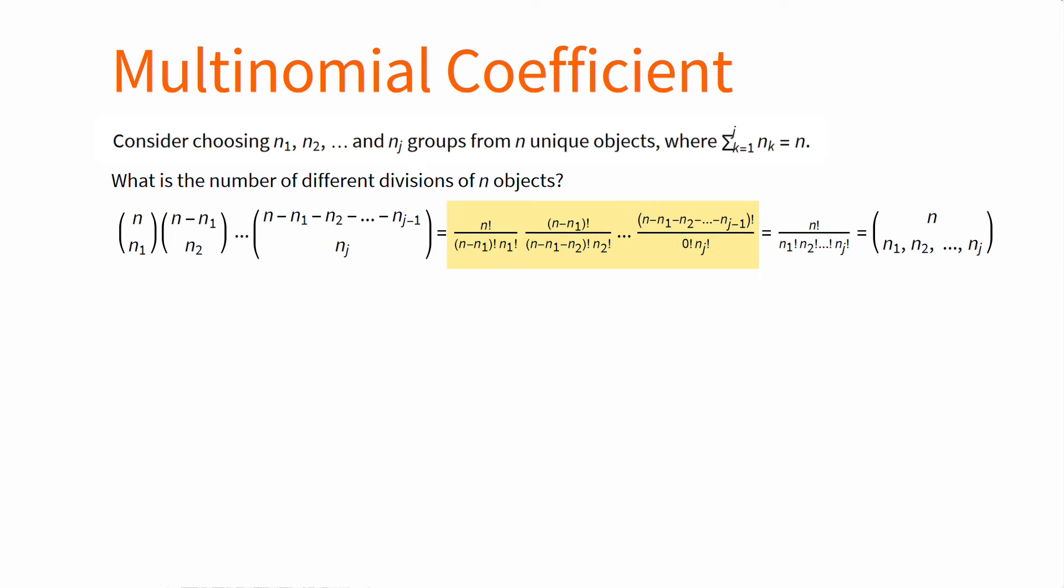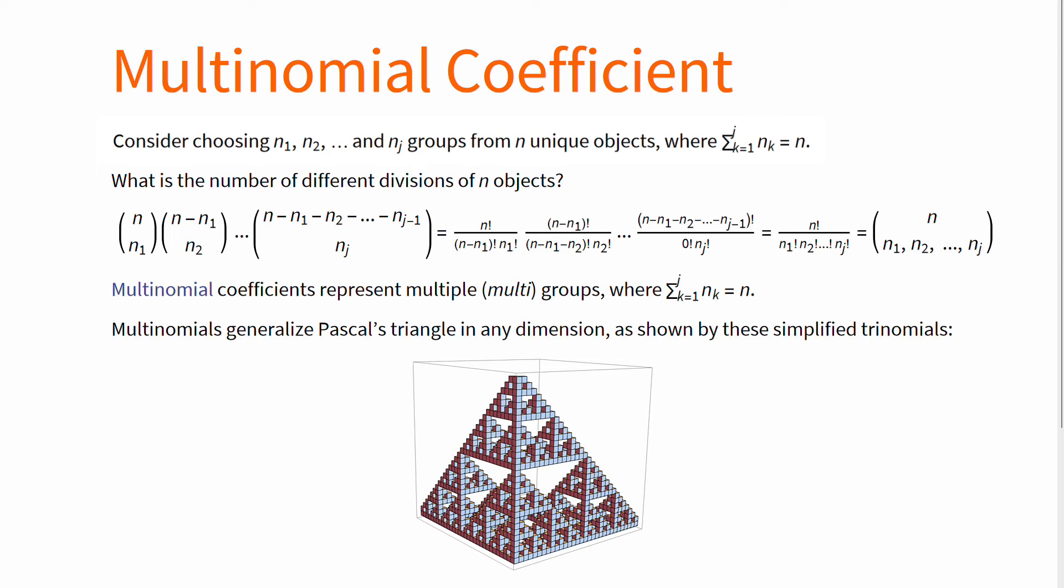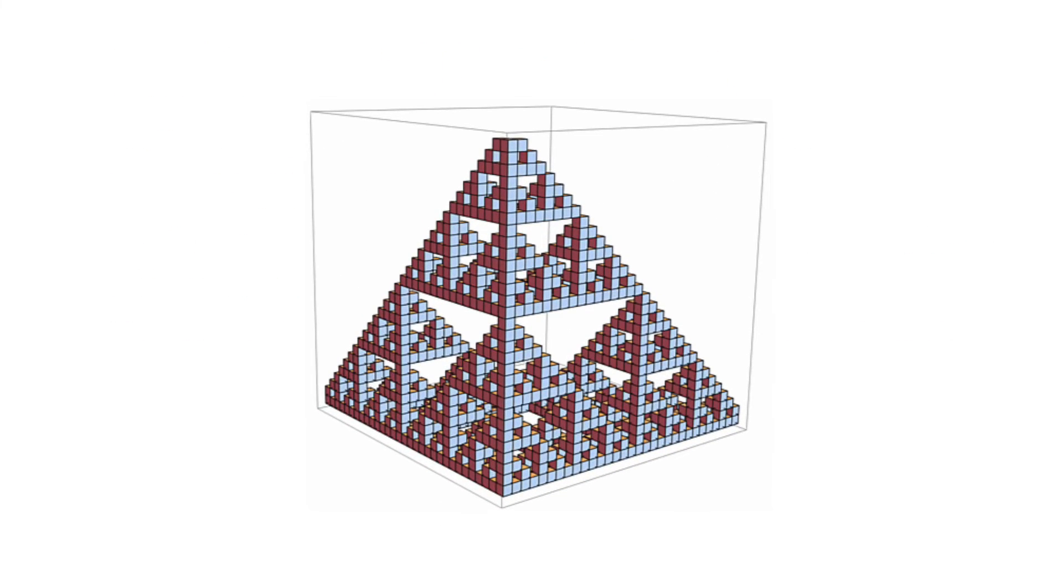And if we look to the right, we see that the factorials actually cancel out, so that we get n factorial divided by n1 factorial, n2 factorial, and so on, nj factorial. And this is the multinomial coefficient. Multinomials are from multiple groups. All concepts seen for binomials generalize to multinomials. As we can see here with simplified trinomials, which replicate Pascal's triangle.